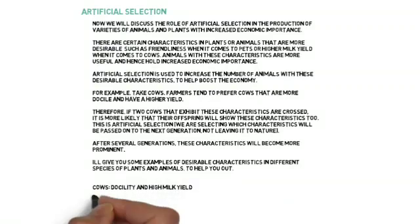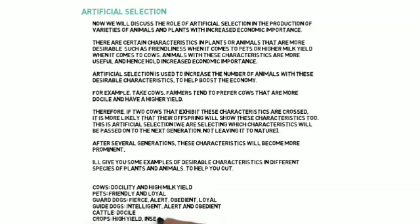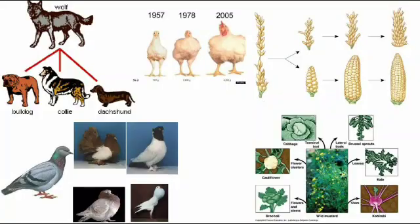Cows: docility and high milk yield. Pets: friendly and loyal. Guard dogs: fierce, alert, obedient and loyal. Guide dogs: intelligent, alert and obedient. Cattle: docile. Crops: high yield, insect and pesticide resistant and a high growth rate.